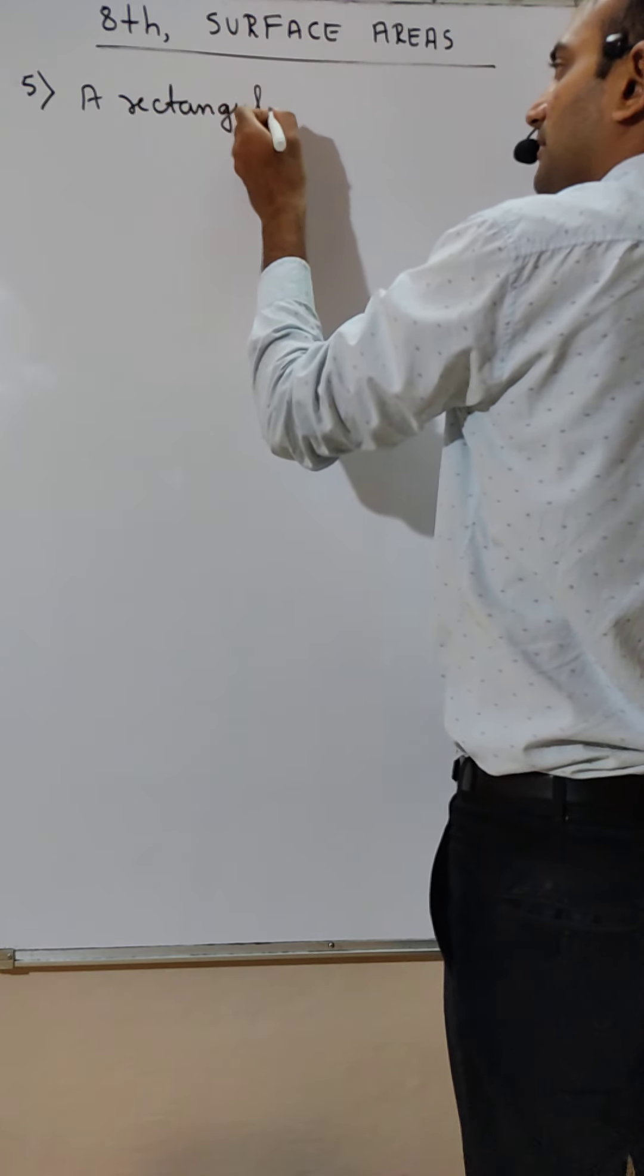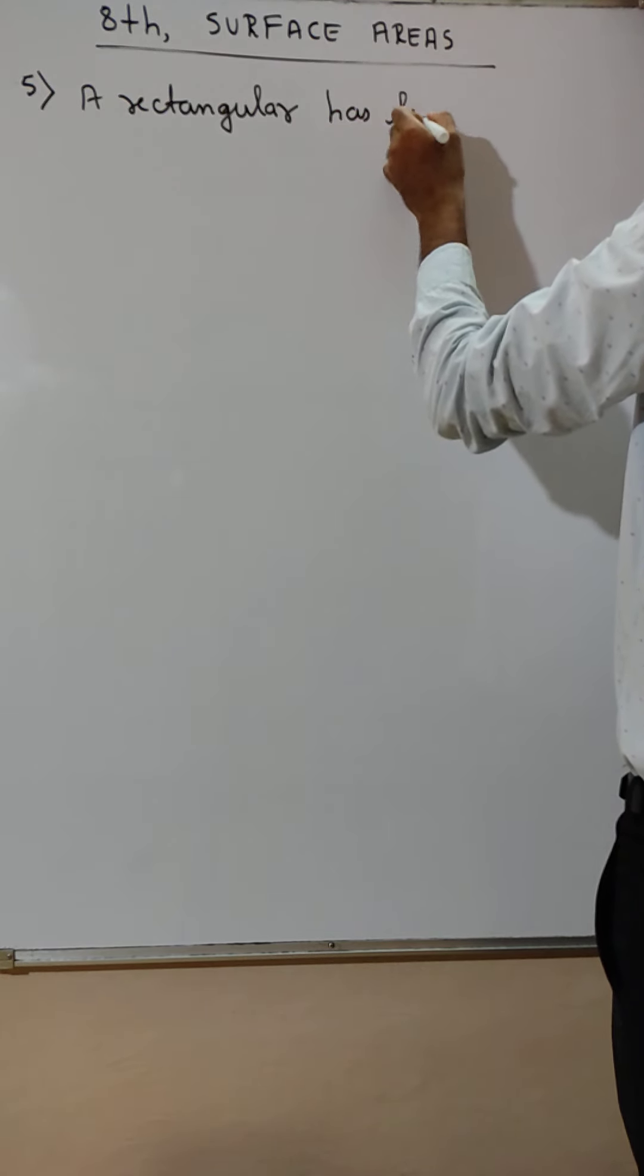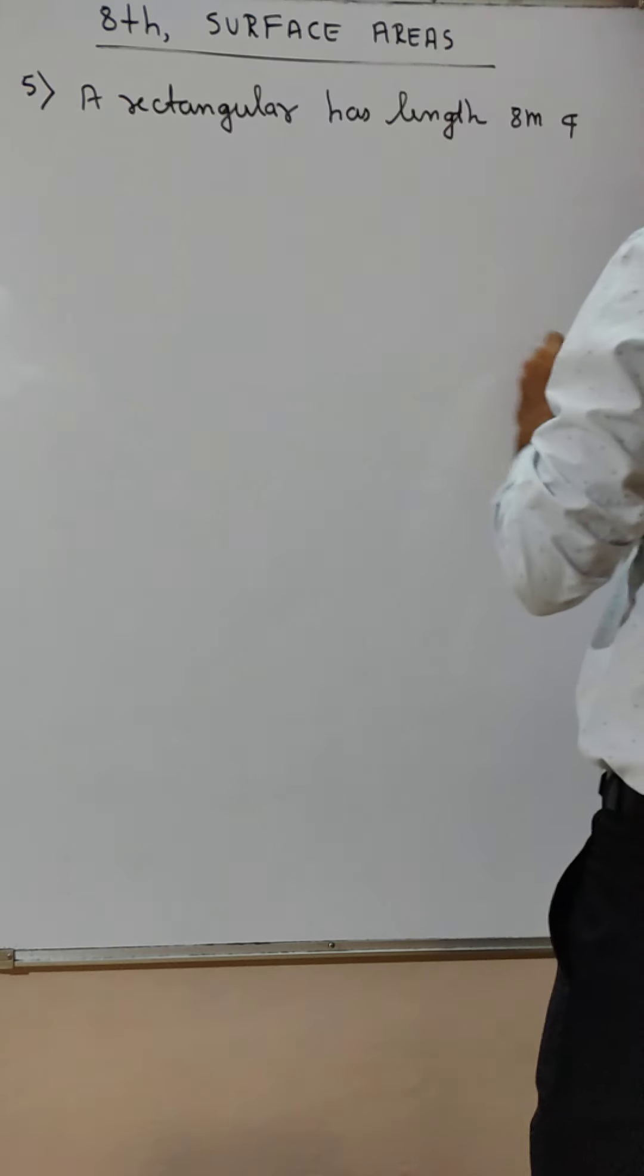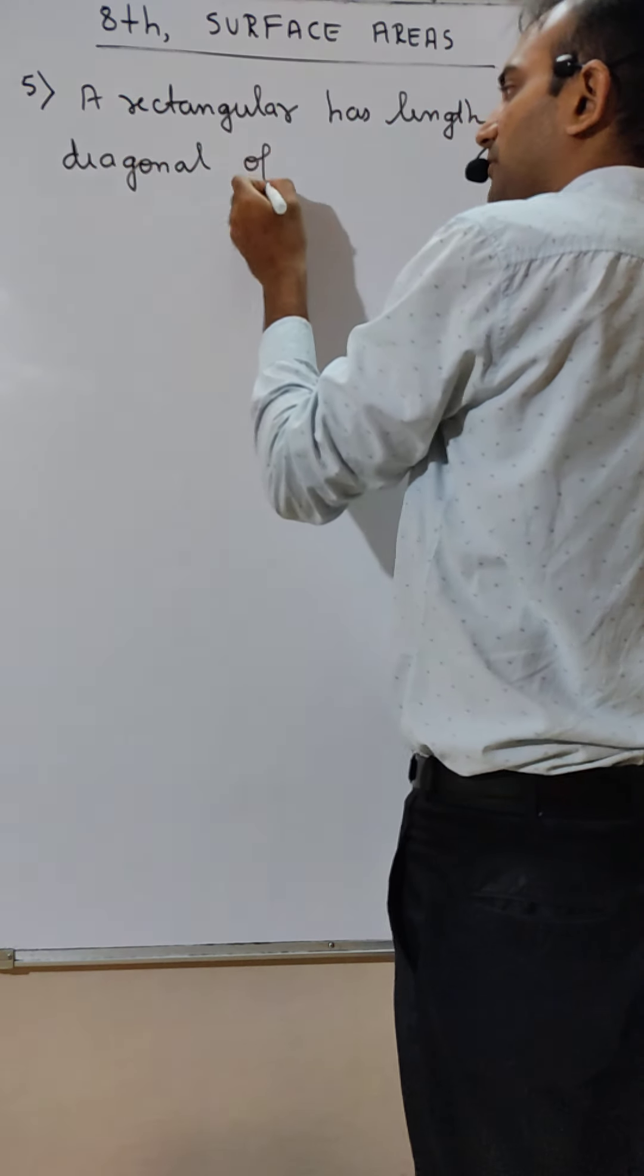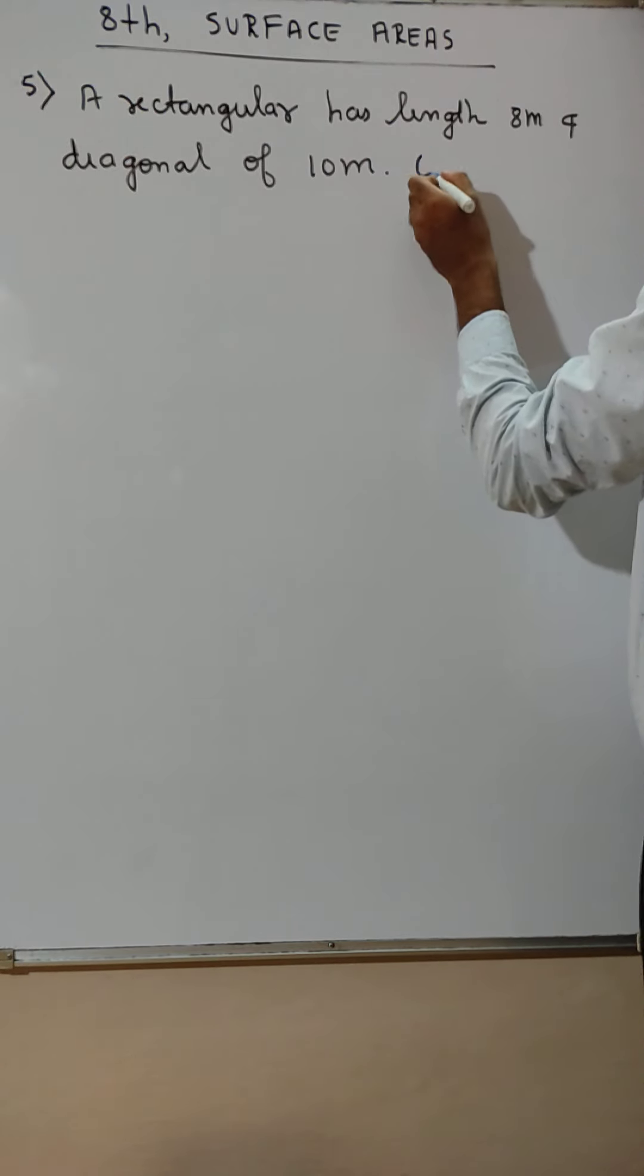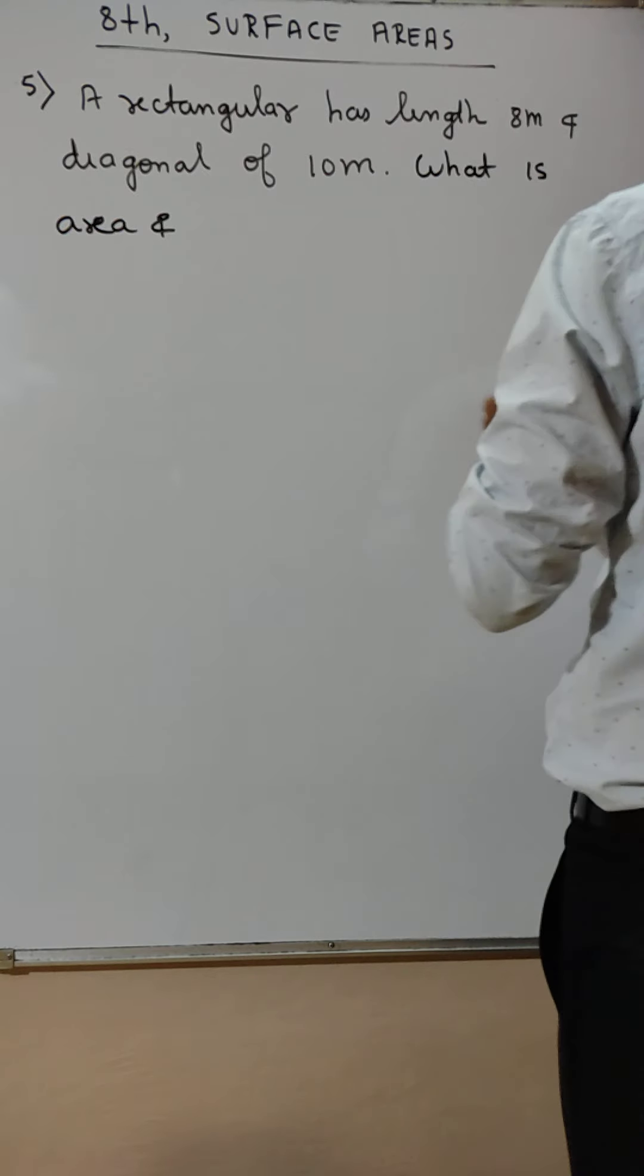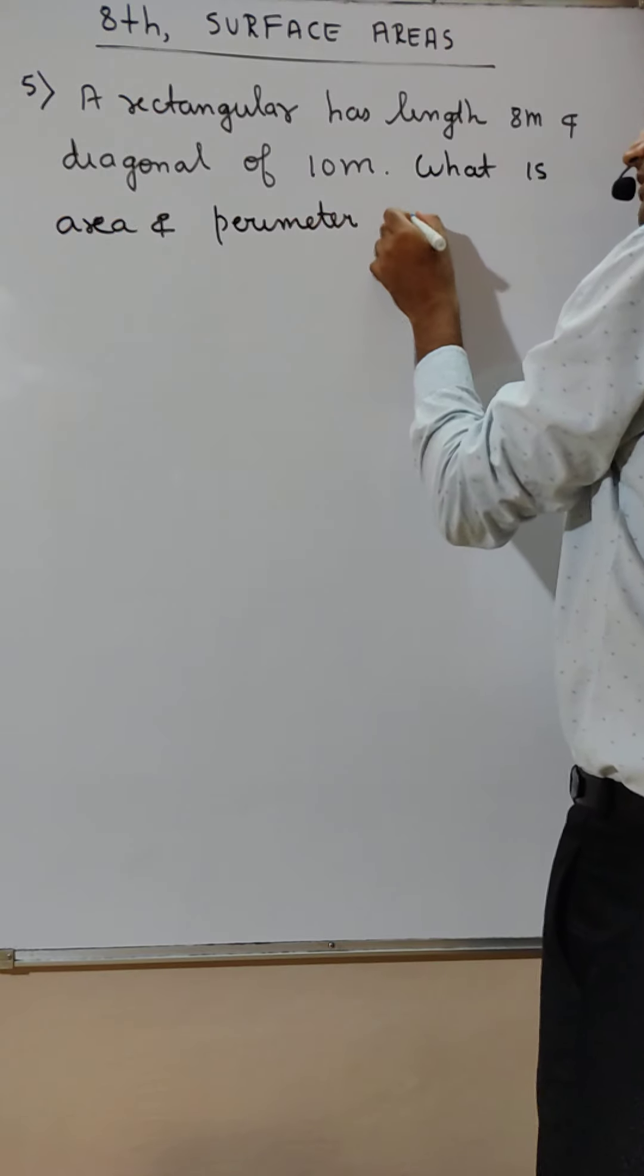A rectangle has length 8 meter and diagonal of 10 meter. What is area and perimeter of rectangle?